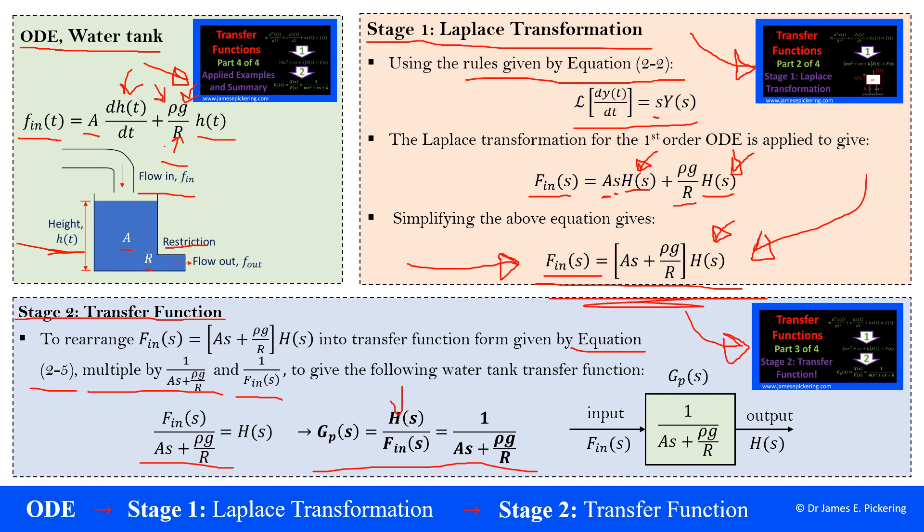In this case, we're looking at a process, we're looking at water tanks, so I've used the notation here g subscript p for process of s. So that there is your transfer function, and what I can do is put it into block diagram form here. So you can see g subscript p for process of s is given by this here. And then the input is the flow in, and the output is the height of the tank. So I hope this video has been useful. If you have any questions, please feel free to contact me. Thank you.